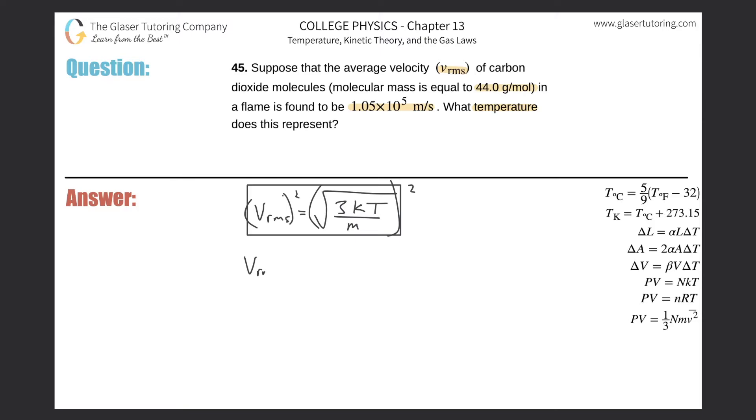We're going to square the left and square the right, so we have v_rms squared equals 3kT divided by the mass. The square gets rid of the square root. Now I got to solve this whole equation for T, so I got to move these three terms away from T.